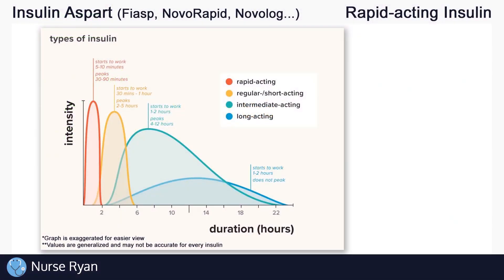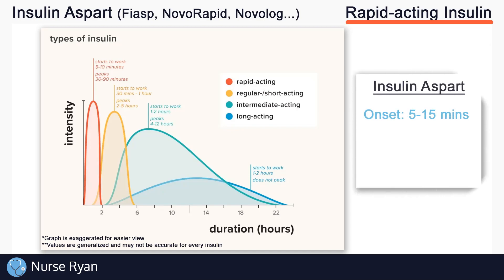Using these three terms — onset, peak, and duration — let's go back and look at insulin aspart. Remember, insulin aspart is a rapid acting insulin, so we'll look at the red colored line. Keep in mind that this chart is not specifically made for insulin aspart, but we can still use it as a guide. Insulin aspart has an approximate onset of 5 to 15 minutes, a peak of approximately 1 to 2 hours, and a duration of about 3 to 5 hours.